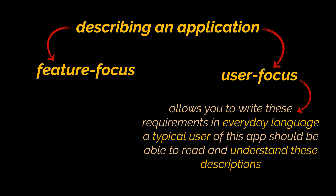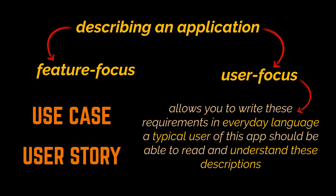Requirements should be as non-technical as possible so that a typical user of the app can read and understand them. There is no one required way to write these, but there are two formats commonly used in this phase of the design process: one is called a use case and the other is a user story. In this video we're going to talk about both, and in a later video we'll expand on how we can design or draw these use cases.